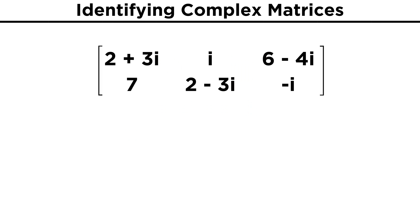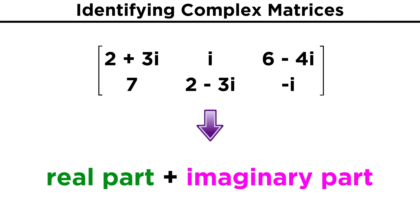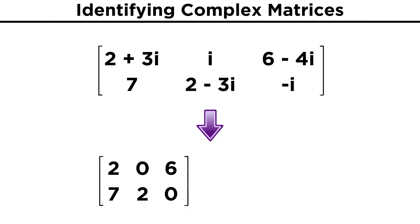For example, let's consider the two by three matrix: two plus three I, I, six minus four I, seven, two minus three I, negative I. We can split this complex matrix up into a real part plus an imaginary part, by keeping in mind that matrix addition works element by element. First, for the real part, we just take the real part of each element and put them in a matrix of the same size. So for the first entry, we take the two from two plus three I.